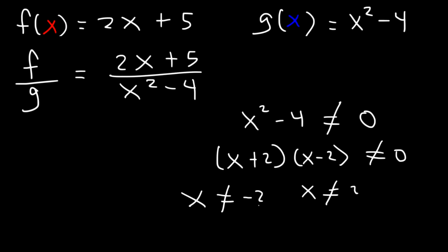We can't plug in negative 2 for x. The function will be undefined. Anytime you have a 0 on the bottom, it's undefined. So how can we write the domain using interval notation if x cannot equal negative 2 or 2? It's going to be from negative infinity to negative 2, union negative 2 to 2, union 2 to infinity.